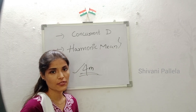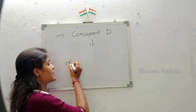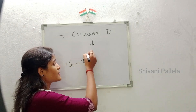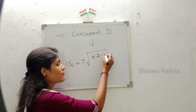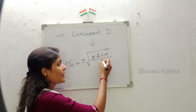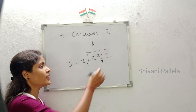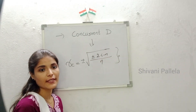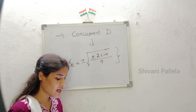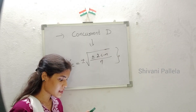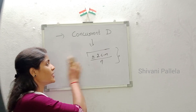Now we will discuss about concurrent deviation. The formula for concurrent deviation is: rc = ±√(±(2C − n) / n). This is the formula of concurrent deviation. They will give the question and we need to substitute into this formula. Just note down this formula.